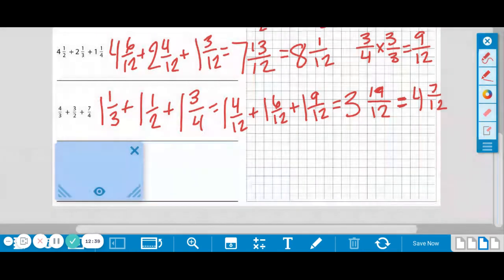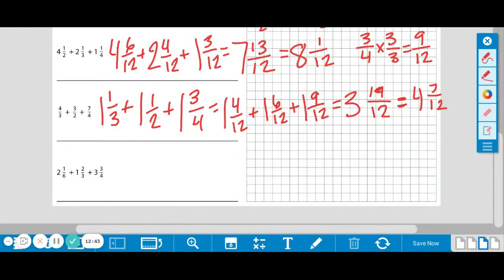One more for this problem string. The last one is 2 and 1 sixth plus 1 and 2 thirds plus 3 and 3 fourths. Looking at these numbers, they're all going to work to become multiples of 12 because we're going to have to change the fractions. So let's just dive right in. 1 sixth—we need to think what times 6 is going to equal 12. Well, we know 2. So the new fraction is 2 twelfths. So 2 and 2 twelfths.